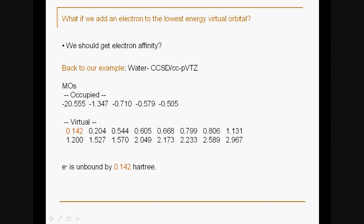Now you can think, if I can apply this to a case where I kick out an electron, how about if I add an electron to the lowest energy virtual orbital, which is our LUMO? What should I get? I should get the electron affinity. Let's look at an example. This is again our water coupled cluster example. Here are the molecular orbitals, the energies, and here is the LUMO.